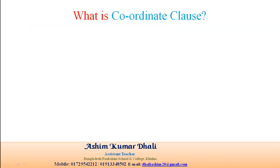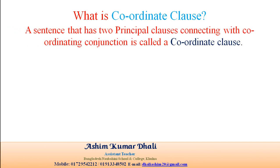What is a coordinate clause? A sentence that has two principal clauses connected with a coordinating conjunction is called a coordinate clause.